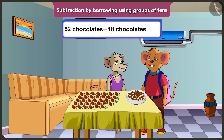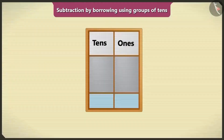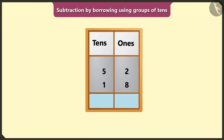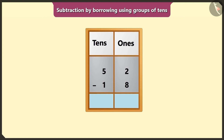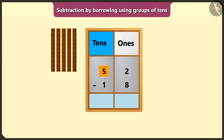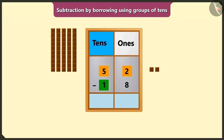We ate 18 chocolates out of 52. So now how many chocolates are left? Let's do subtraction after writing 52 and 18 in the box of ones and tens. You had 52 chocolates — which means 5 tens and 2 ones. We ate 18 — that is 1 ten and 8 ones.